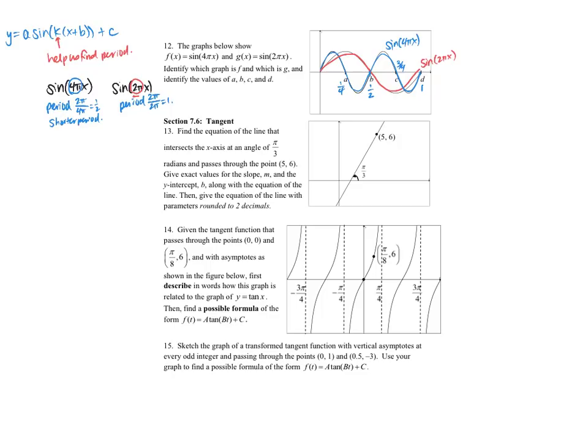Number 13 says, I want to find the equation of the line that intersects the x-axis at an angle of pi over 3 radians and passes through the point 5, 6. Give exact values for slope and y-intercept along with the equation of the line.